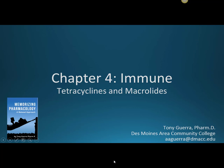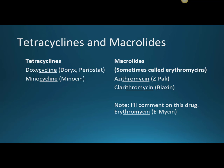This is chapter four: tetracyclines and macrolides. We're going to use four drugs to start and then add a fifth later. Tetracyclines: the generic doxycycline, brand names Doryx and Periostat. Periostat is a different function and different dosage, and I'll talk about that in a little bit.